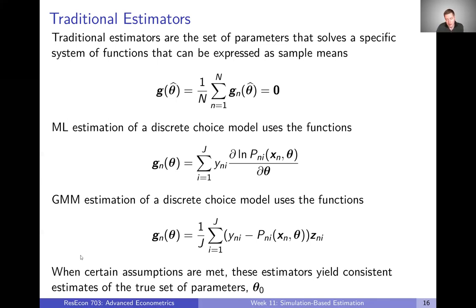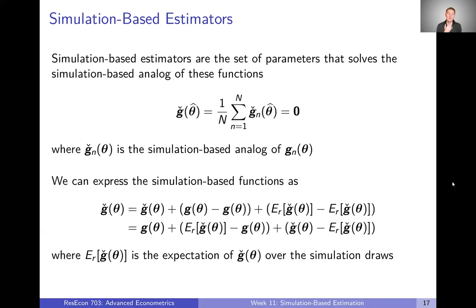When certain assumptions are met — pretty weak assumptions in most cases — these estimators yield consistent estimates of the true set of parameters theta sub zero. So our theta hat, the theta that solves this expression, is in general going to be a consistent estimator for our true parameters theta sub zero. That was still just talking through traditional estimators; now let's talk about the simulation-based analogs.